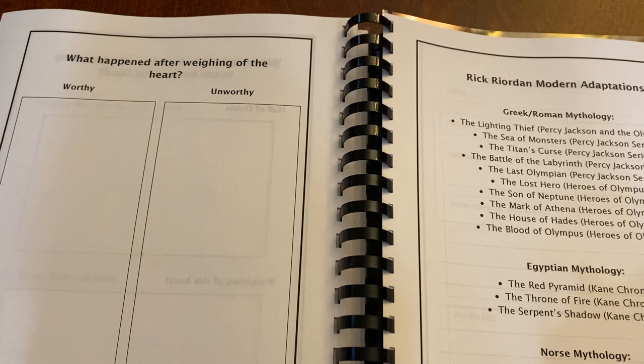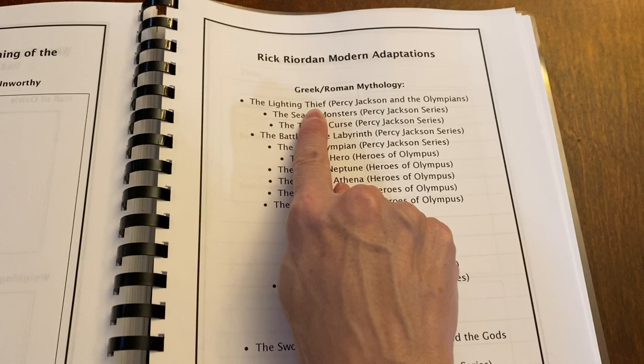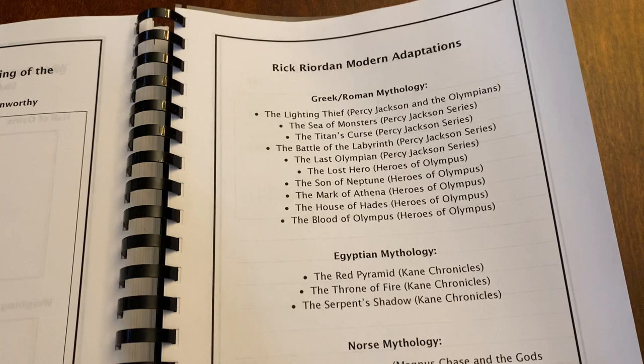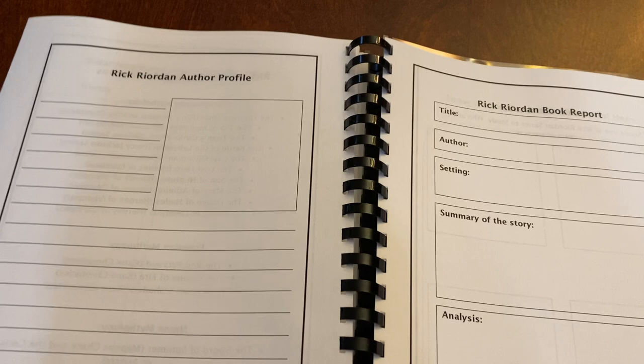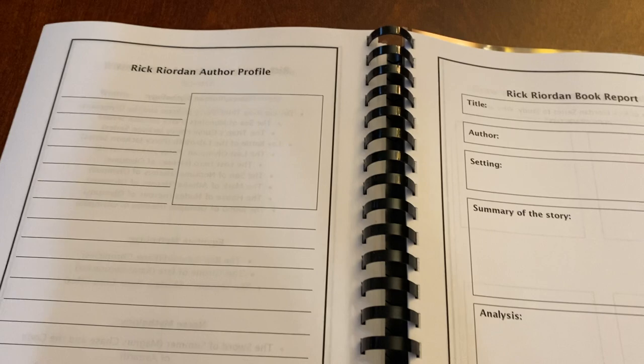Here we have Rick Riordan's modern adaptations. The Lightning Thief is one of the reads recommended in the Blossom and Root unit, so we'll probably stick with that. I actually read it many years ago — it was not my favorite book, but I also did not know much about mythology. I think it was hard to follow all the gods and goddesses without knowing who they were. So I'm actually kind of excited to learn more about it and then dig back in and see if I enjoy it more.